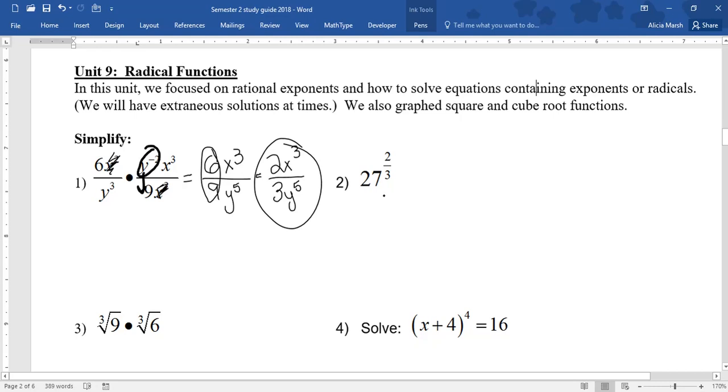So, then I also had 27 to the two-thirds power. Remember, that converted. So, it would be the cube root of 27 squared, which the cube root of 27 is 3. You're going to definitely need that perfect root chart. That will be allowed to be used the entire time during your final. So, it would be 3 squared. And 3 squared is, in fact, 9.